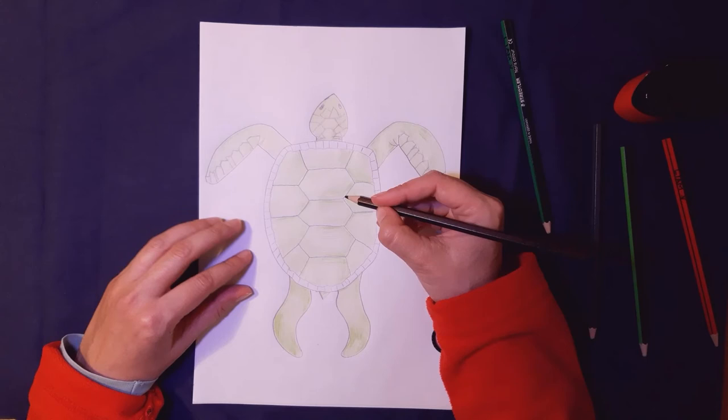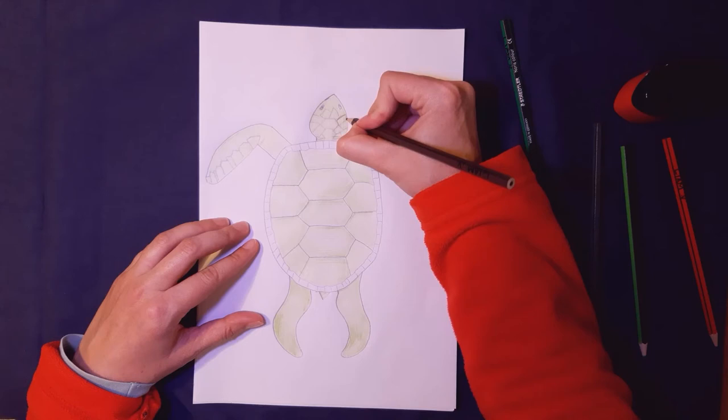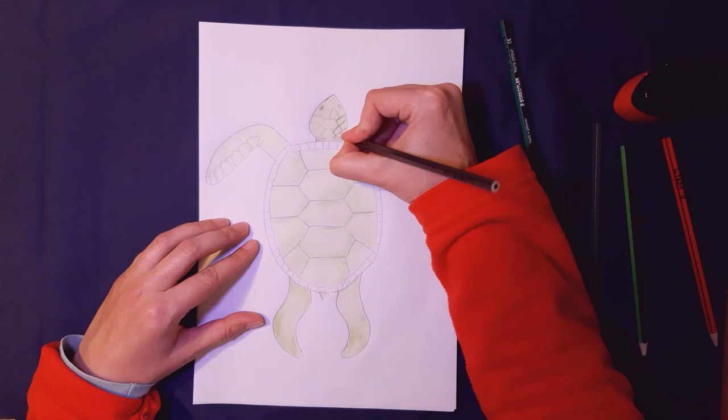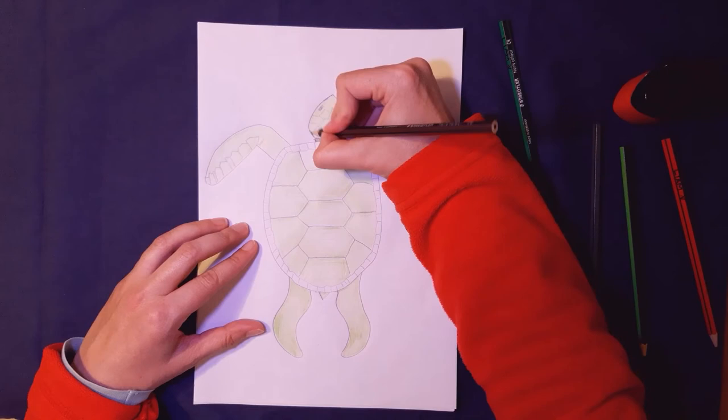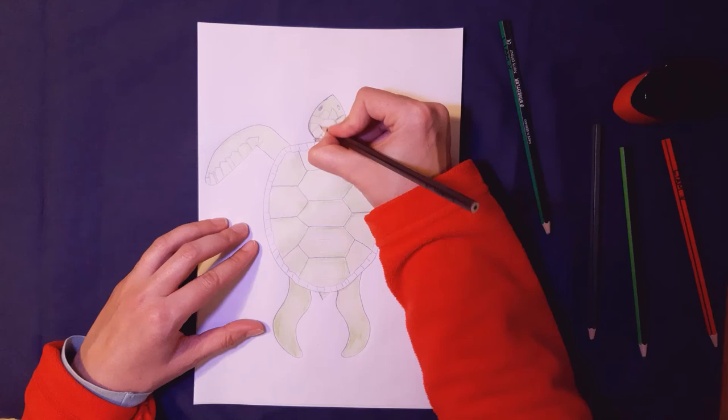But to start off with I can at least sort of go around some of these shapes. I'm going to use the brown first. Let me put some brown around his neck where he's got those creases around his neck.